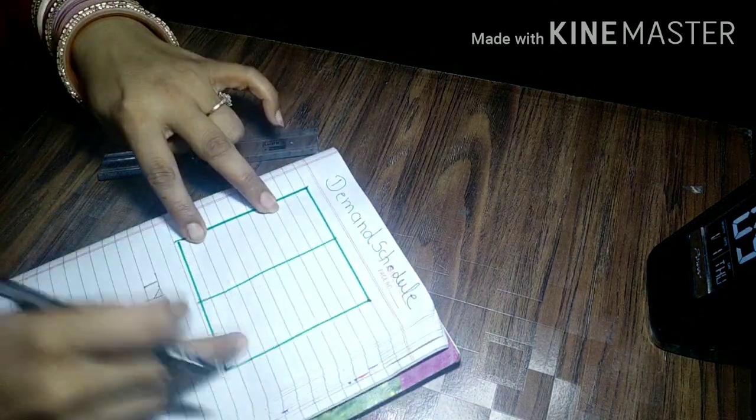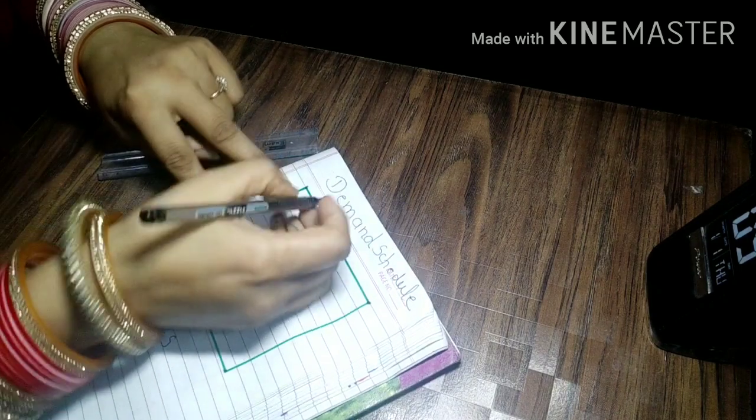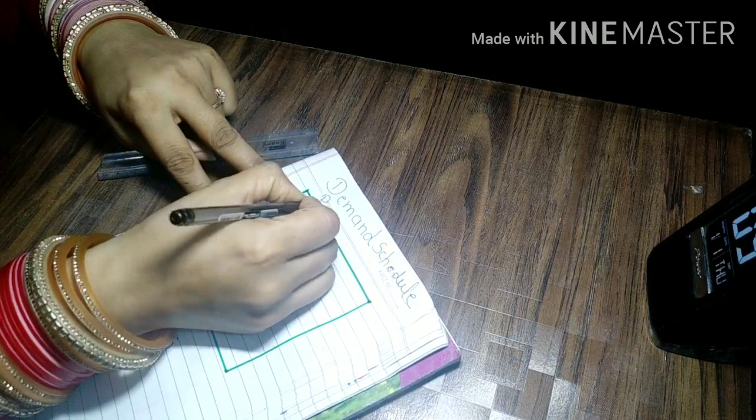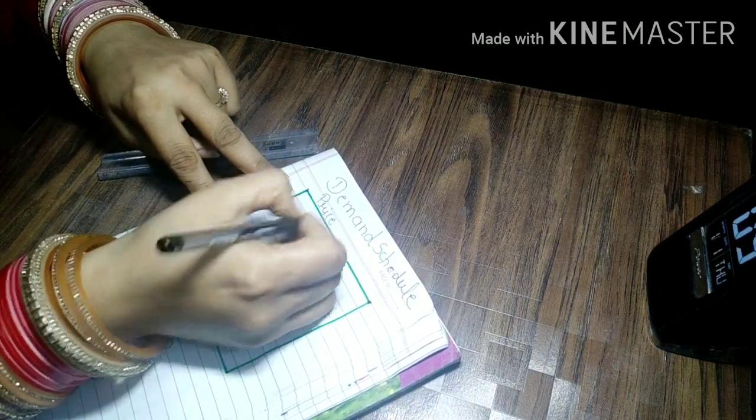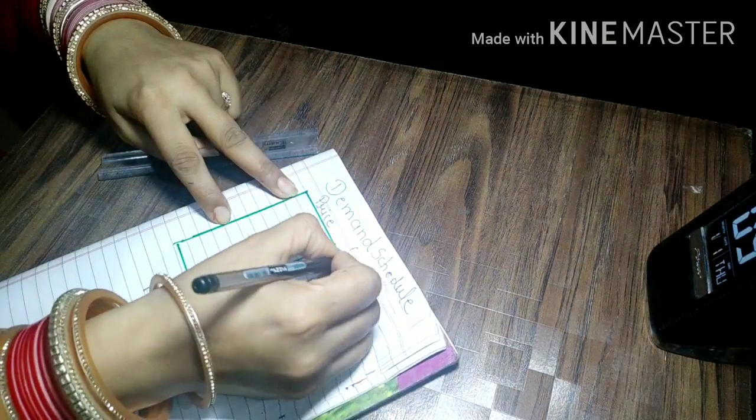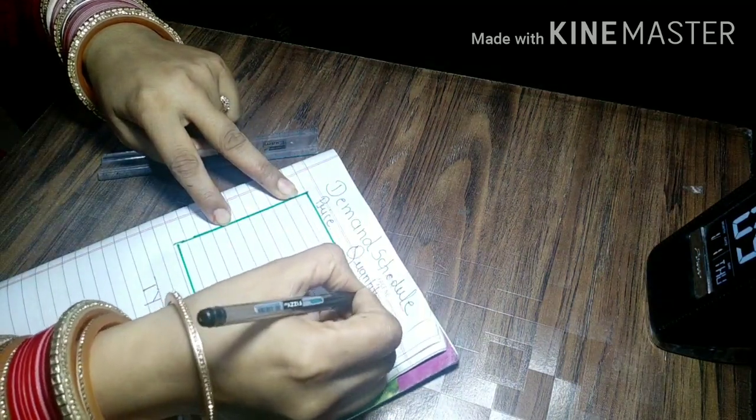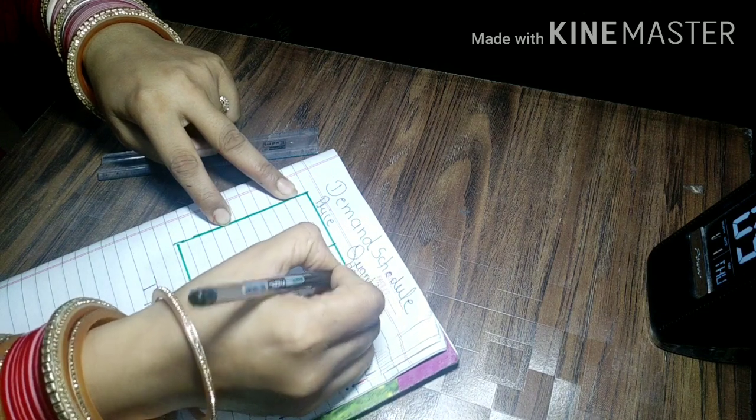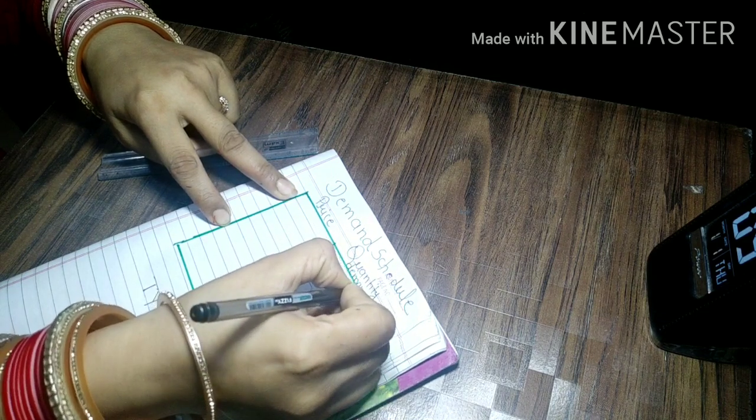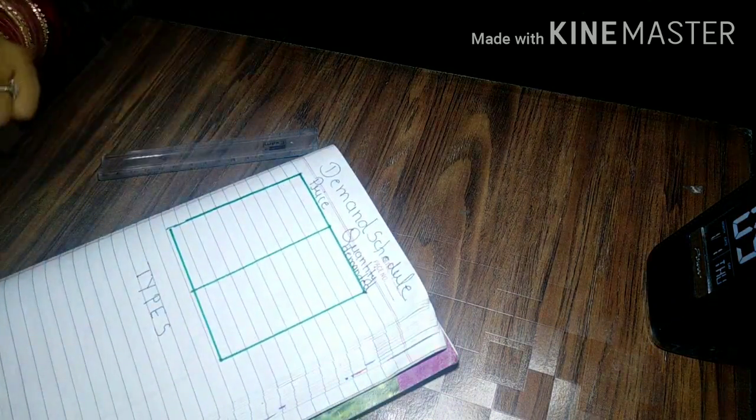So we should write down two columns. One is the price. Two is the price. One is the quantity demanded for any commodity.